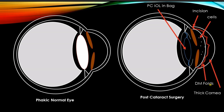The second thing that happens is that during phacoemulsification, a lot of debris is blown into the endothelium, producing endothelial pump failure. Temporarily it knocks down the endothelial pump, leading to corneal edema. Here you can see the normal corneal thickness compared to the increased thickness. Due to this increase, the posterior curvature of the cornea becomes flatter.